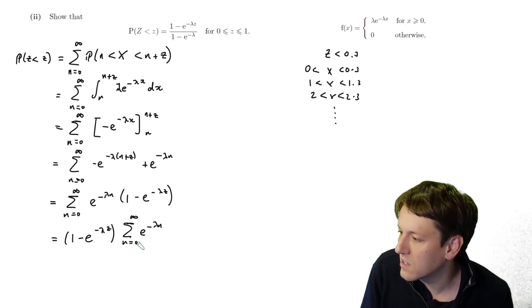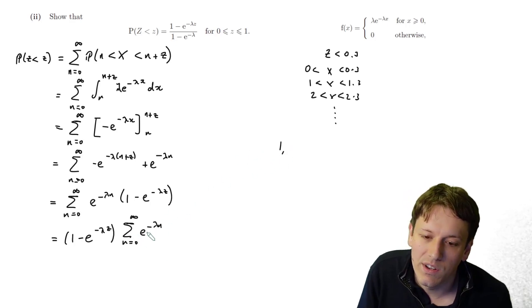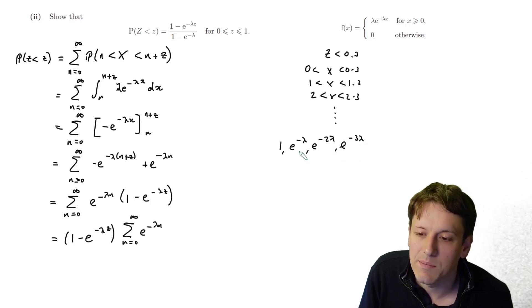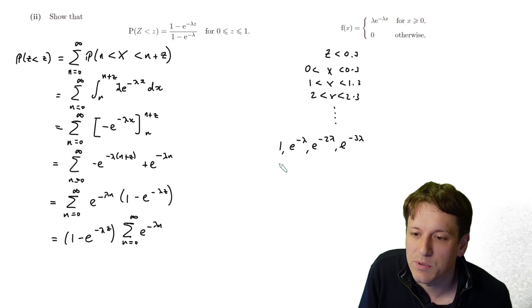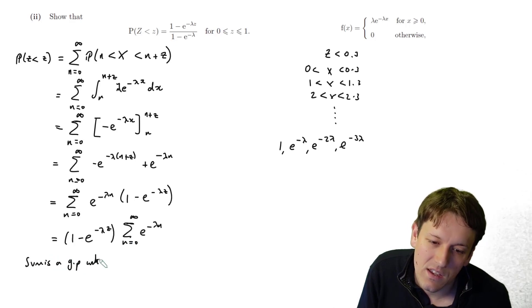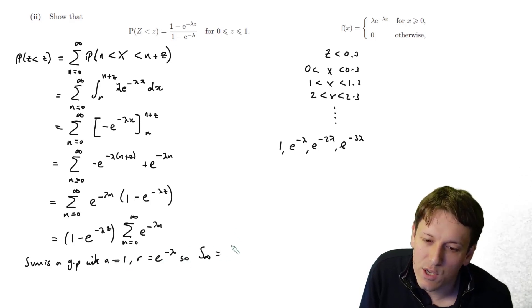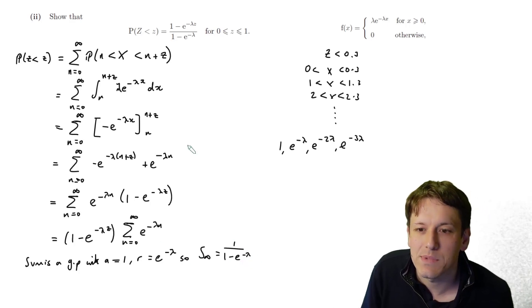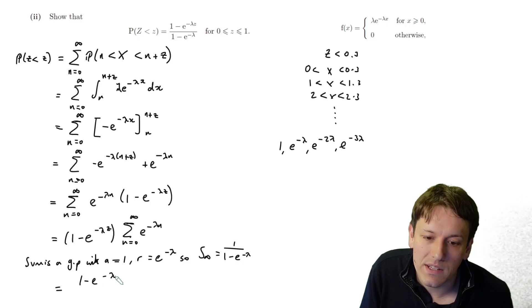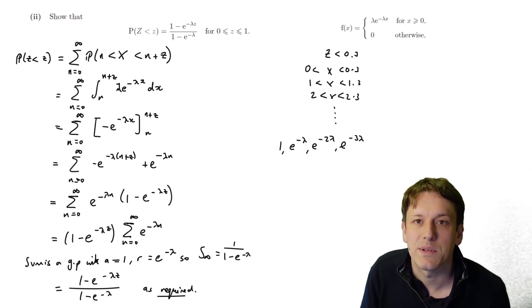We have (1 − e^(−λz)) times the sum from n=0 to infinity of e^(−λn). This sum is a geometric progression with first term 1 and common ratio e^(−λ), so its sum to infinity is 1/(1 − e^(−λ)). Therefore P(Z < z) = (1 − e^(−λz))/(1 − e^(−λ)), as required.